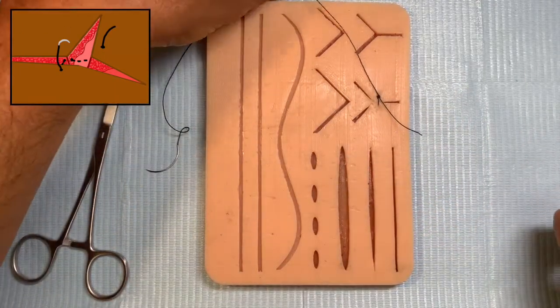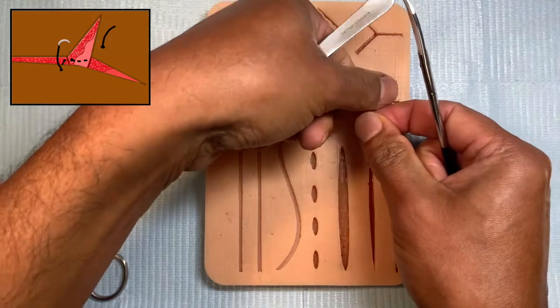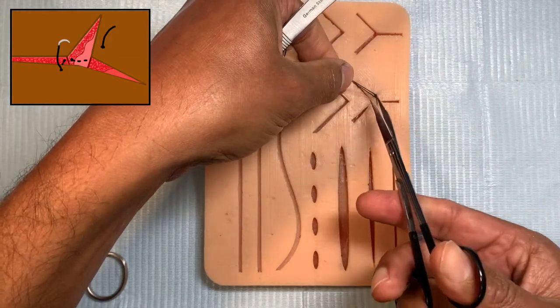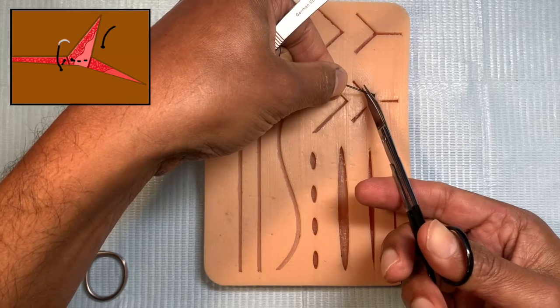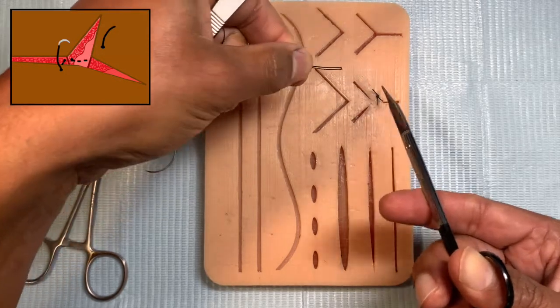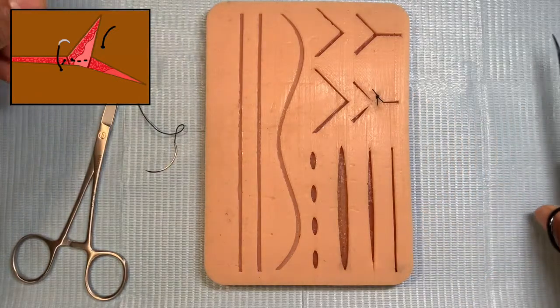The key element for this suture is that you take the pass through the triangle through the papillary dermis and don't take it too deep or too much on the surface.